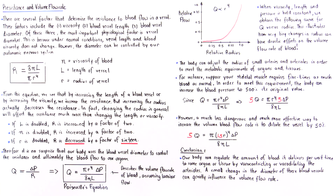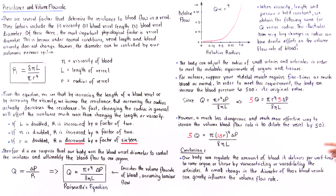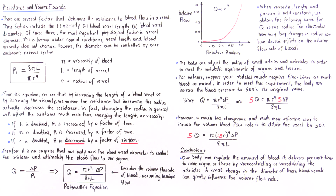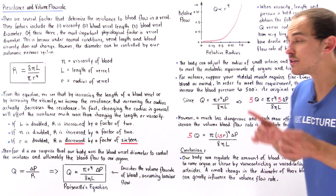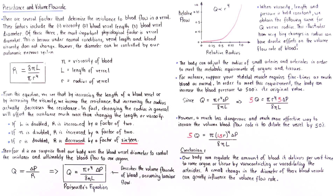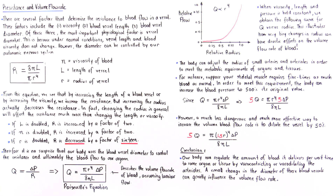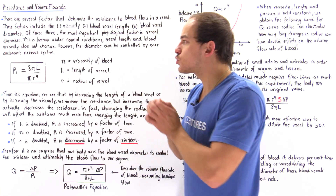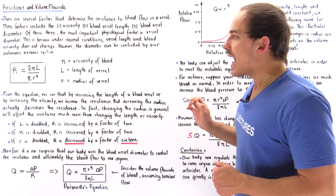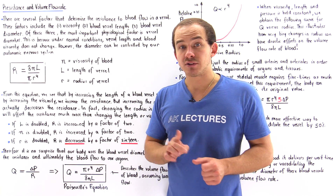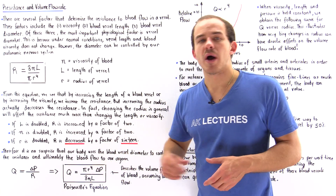We can conclude that our body regulates the amount of blood delivered to a given tissue over time by either vasoconstricting or vasodilating — changing the radius of our arterioles and small arteries. A small change in the diameter of these blood vessels will greatly change the resistance, which greatly influences the volume flow rate of blood. Resistance is controlled by changing the radius, and changing the radius changes our volume flow rate Q by the greatest percent compared to other factors such as pressure, length, and viscosity.